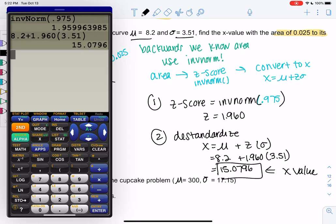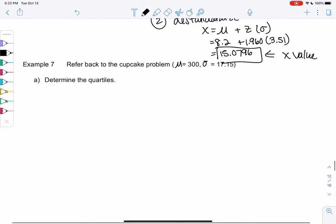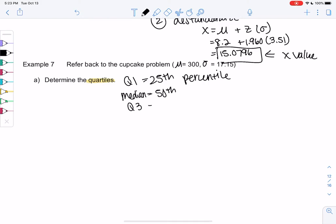Let's go ahead and check out this last example, example 7. We were looking at those cupcakes a while ago. So they had average calories of 300 and a standard deviation of 17.15. So let's start with the quartiles from chapter 3. So the quartiles, Q1 was the 25th percentile. And then we had the median was 50th. There's not much work there. And then Q3 was the 75th percentile.